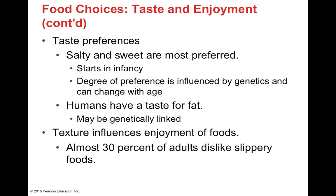All humans across the board have a taste for fat, which is genetically linked. Individuals in cold climates have a greater taste for fat because they need more layers on their skin to survive the cold, and in winter when food is scarce they may face long periods of near-deprivation, so they must store fat during months when food is available. Texture also plays a big role — almost 30% of adults report disliking slippery foods. For example, I don't like flan even though I like the flavor, and I don't like pudding, though I do like rice pudding because the texture has more substance.